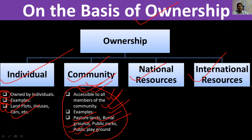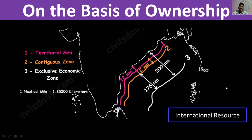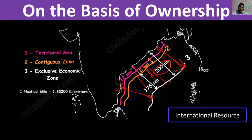National and international resources are mainly related to oceanic water. The coastal area up to 200 nautical miles from the coast — such as the Bay of Bengal — falls under national resource. India has rights over the resources found in this oceanic water up to 200 nautical miles.